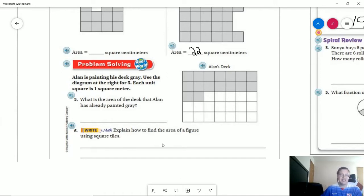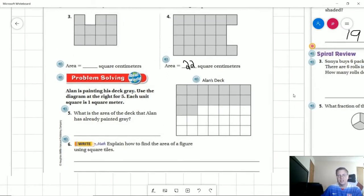Number six, explain how to find the area of a square using tiles. Well, the easiest way, and what we've been doing the most often, for instance here, is just count the number of tiles.